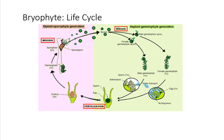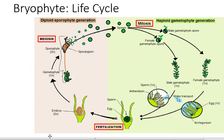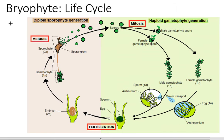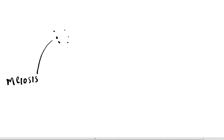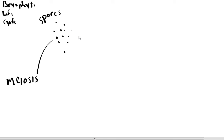Here is the bryophyte life cycle. There's a picture of it — if you like it, pause and use it. I'm going to draw the bryophyte life cycle. We're going to start with meiosis — I start with meiosis every time, not because it's the right place to start, but because I like to. Meiosis is the production of spores.